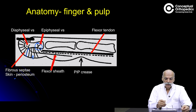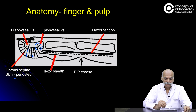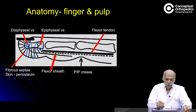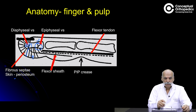If infection and pus accumulate in the pulp area, the terminal diaphyseal blood vessel supplying the distal phalanx gets compressed, which can create avascular necrosis of the distal part of the distal phalanx. The epiphyseal blood vessel does not traverse through the inexpansile pulp, and that is why the proximal part of the distal phalanx remains unaffected. This anatomical fact is very important when treating pulp space infections and abscesses known as a felon.